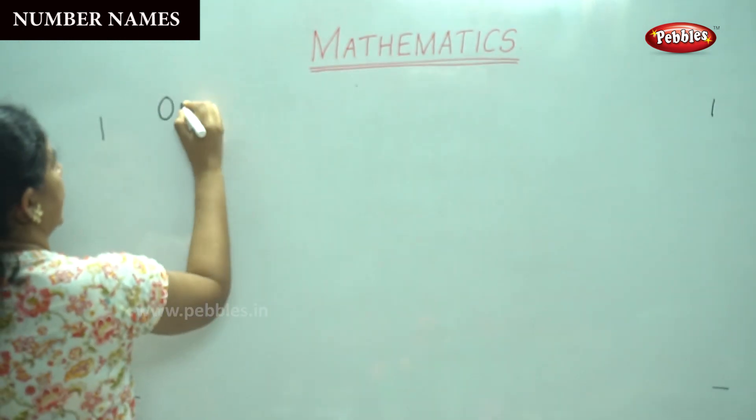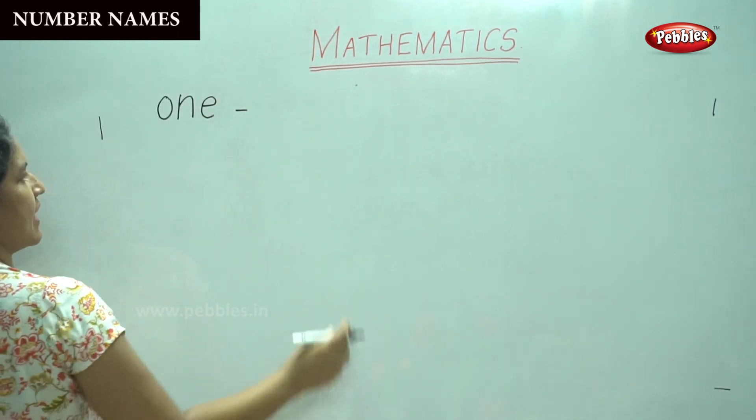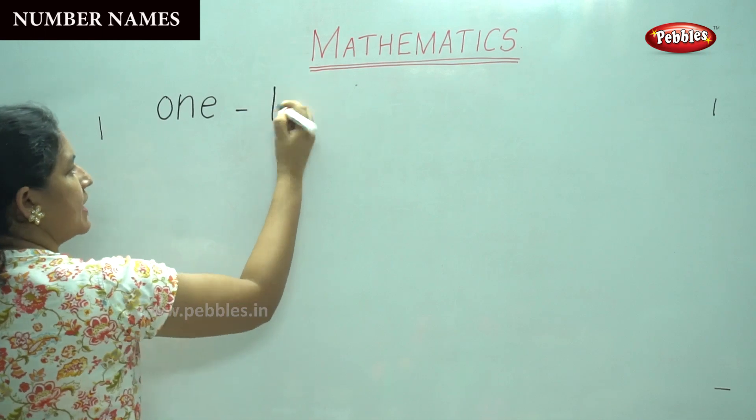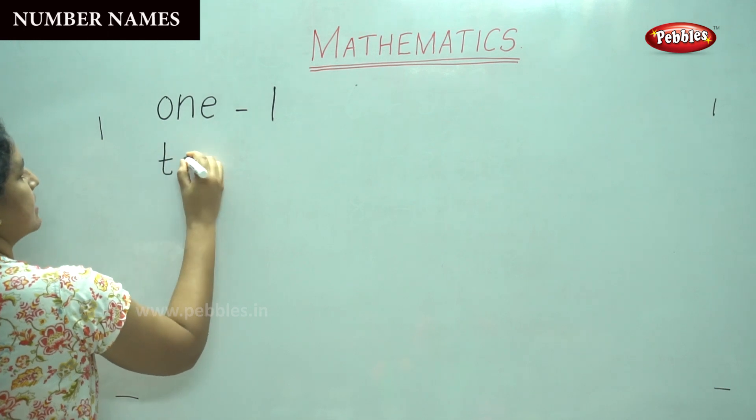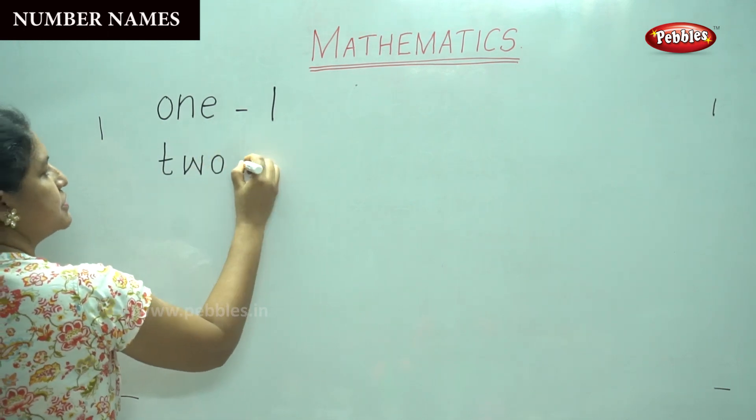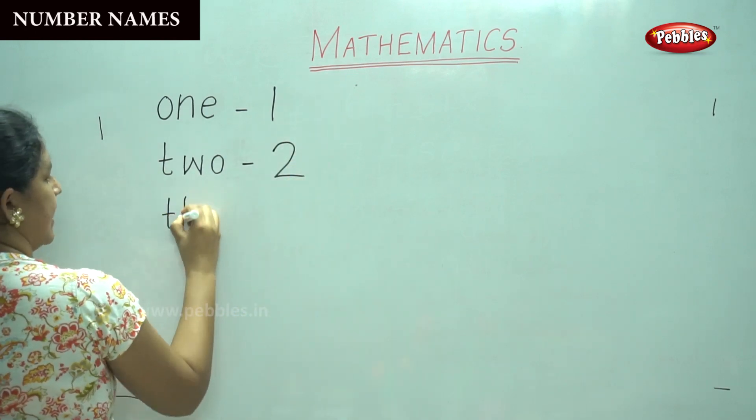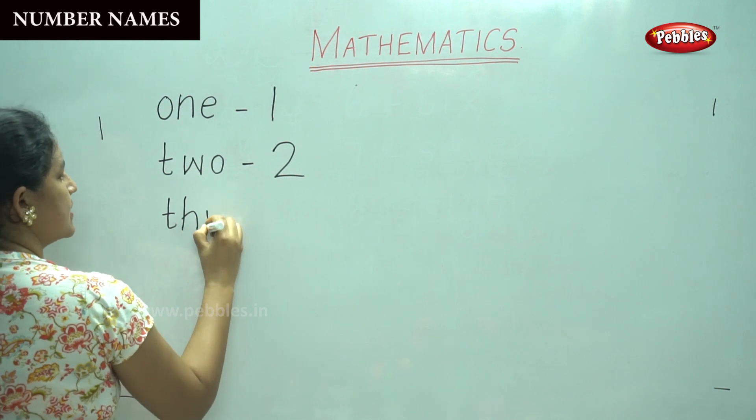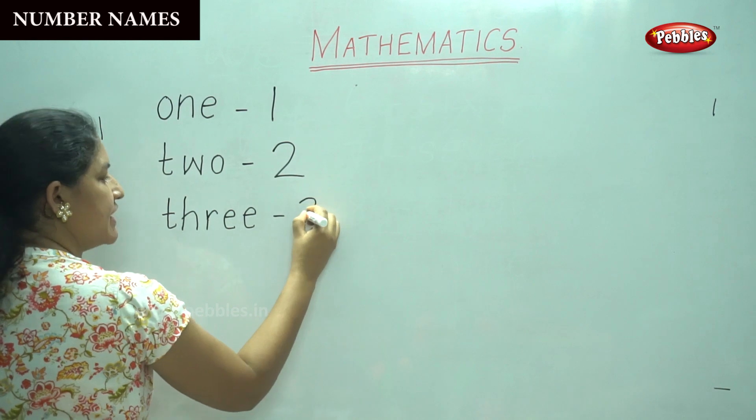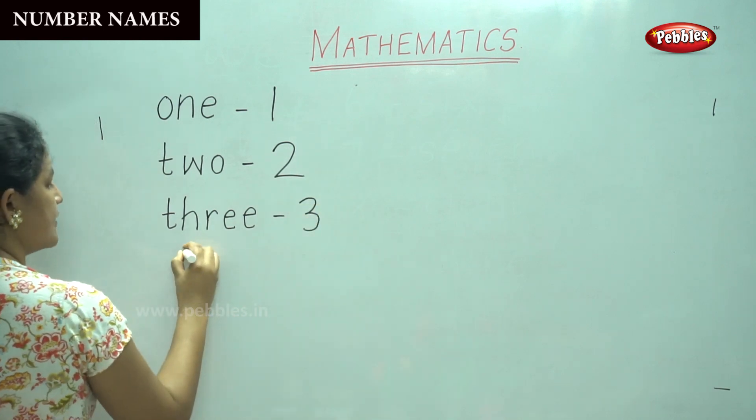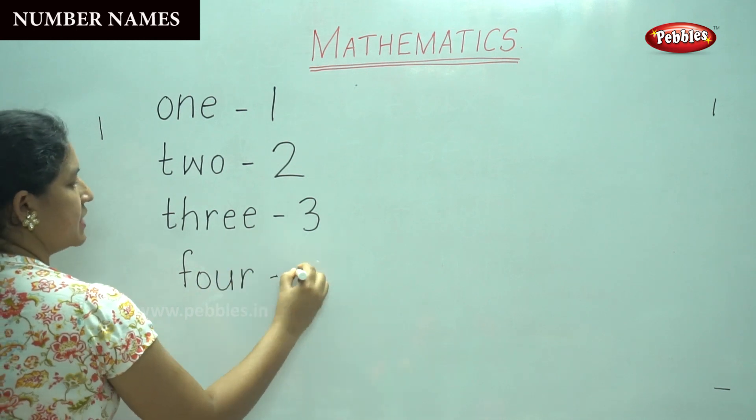O-N-E, 1. So you will write the number 1 at the side of spelling. T-W-O, 2, number 2. T-H-R-E-E. It is number 3. F-O-U-R. Number 4.